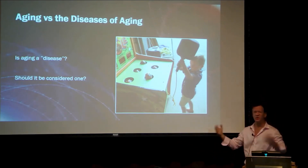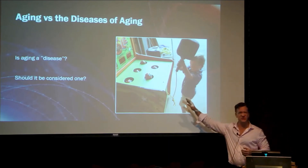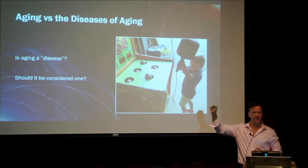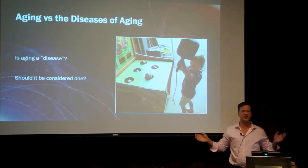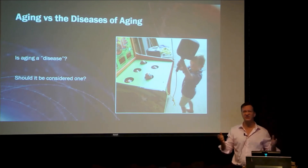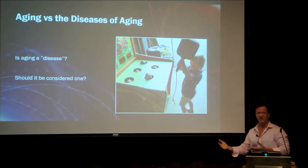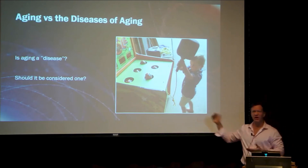Same thing with heart disease or whatever else. All of these diseases become exponentially more likely as we get older. That doesn't mean teenagers don't get cancer — sadly, little kids do get cancer — but the chance of an 80-year-old getting cancer is far higher than a 15-year-old.